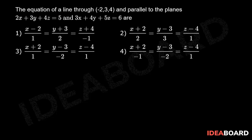The equation of a line through (-2, 3, 4) and parallel to the planes 2x + 3y + 4z = 5 and 3x + 4y + 5z = 6 are: